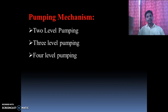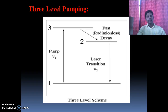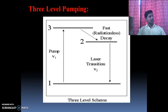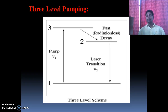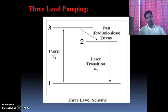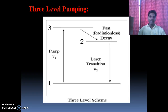In the three-level pumping scheme, there are three energy levels: E1, E2, and E3. Atoms first go from level E1 to E3, then spontaneously come down to level E2. In three-level pumping, E2 is the metastable state. Population inversion occurs between energy level E2 and energy level E1, meaning the number of atoms in the excited state is more than in the lower state.